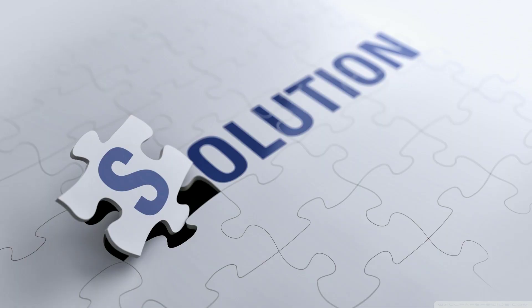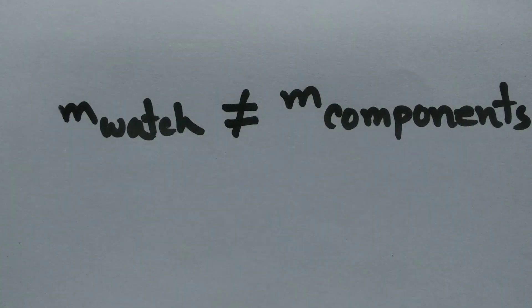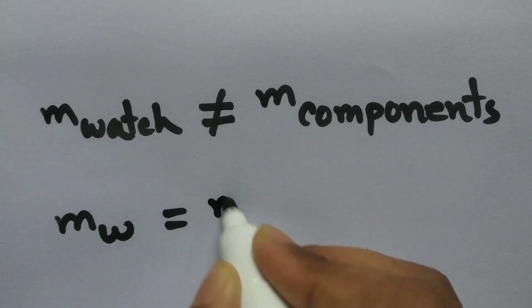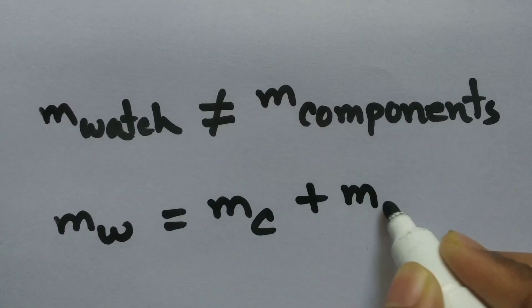Here's the solution. Mass of the watch isn't the sum of the components only. There is something more. You may write mass of watch equals mass of components plus mass extra.